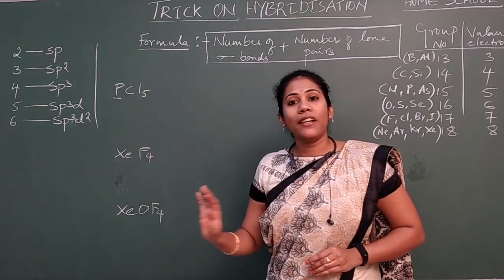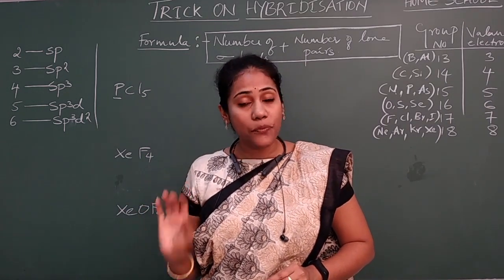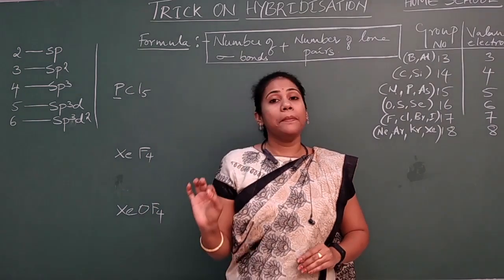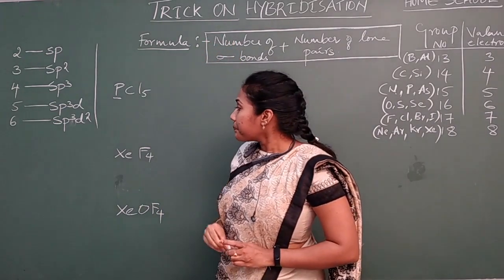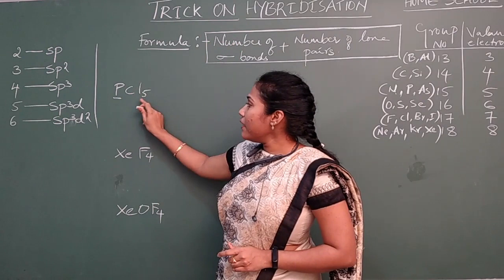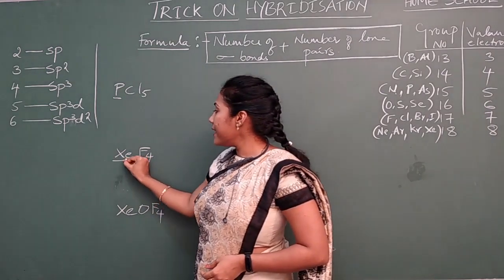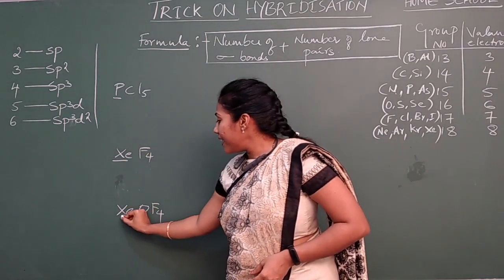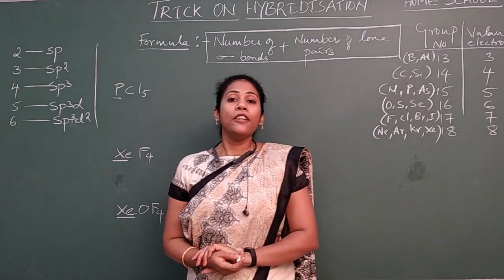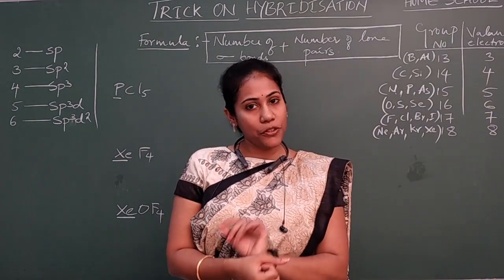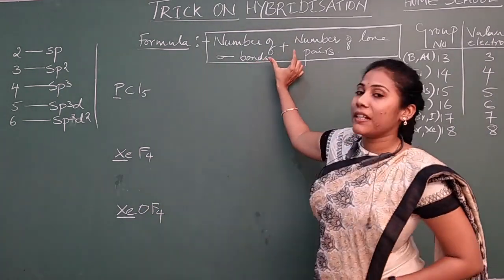Hybridization is a concept studied with respect to the central atom of a molecule. Whenever you see a molecular ion, you should be able to identify which is the central atom. For example, in PCl5 phosphorus is central, in XeF4 xenon is central, and in XeOF4 xenon is also the central atom. Finding the central atom is very important.